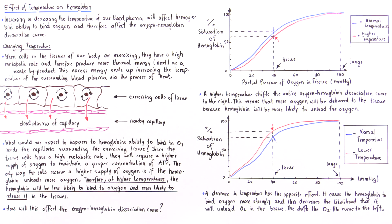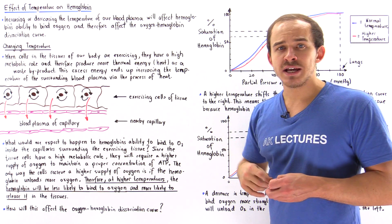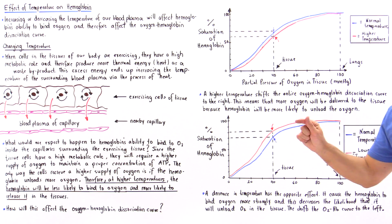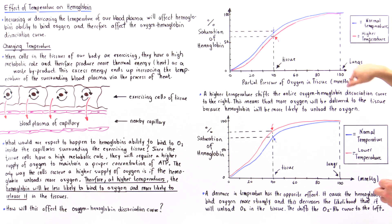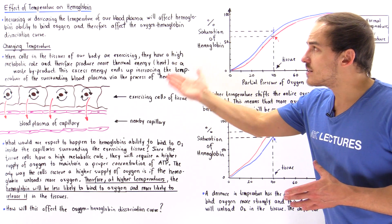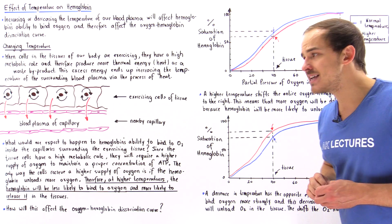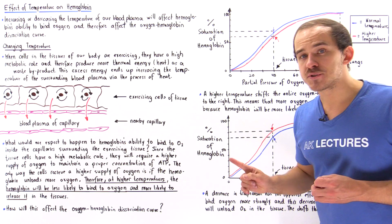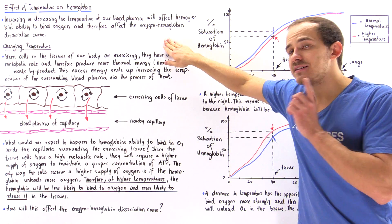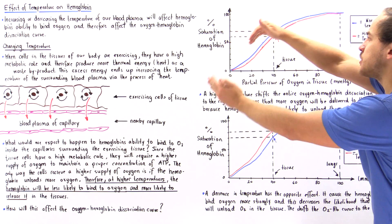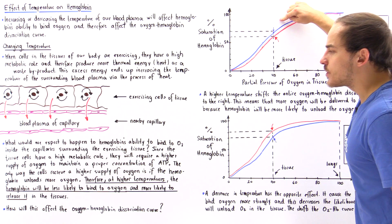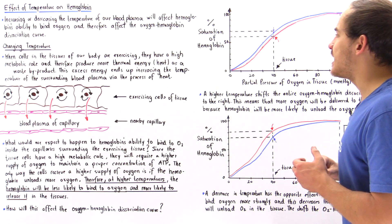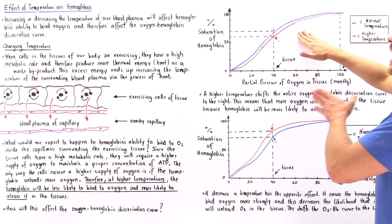Let's take a look at the following diagram. The y-axis is the percent saturation of hemoglobin, ranging from 0 to 100. The x-axis is the partial pressure of oxygen within our tissue, given in millimeters of mercury. The blue curve describes our oxygen-hemoglobin dissociation curve at a normal body temperature of about 36.7–37 degrees Celsius. The red curve describes the same curve but at a slightly higher temperature, and notice that the red curve is shifted to the right compared to the blue curve.